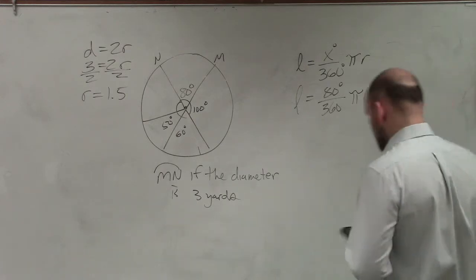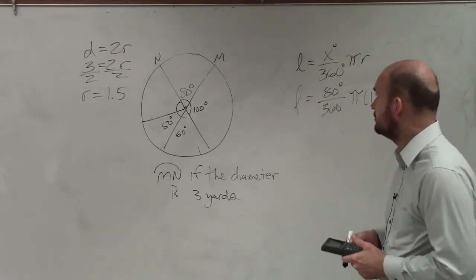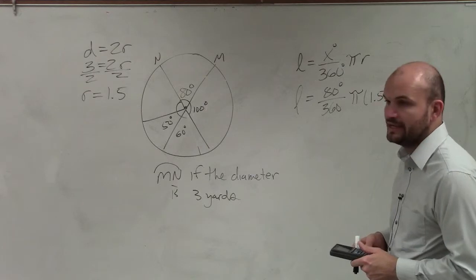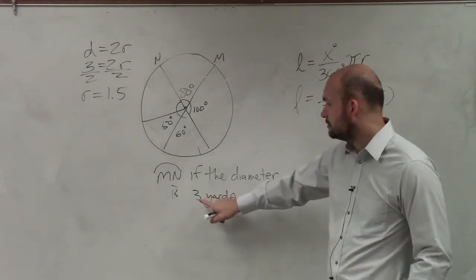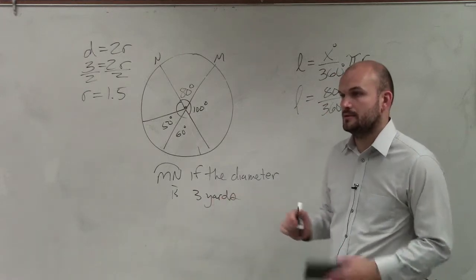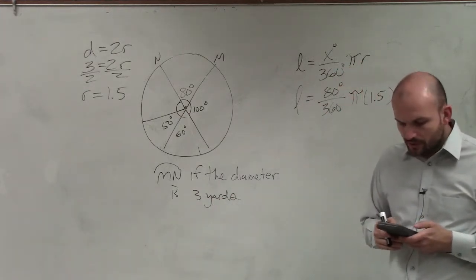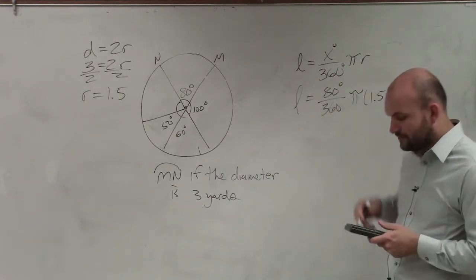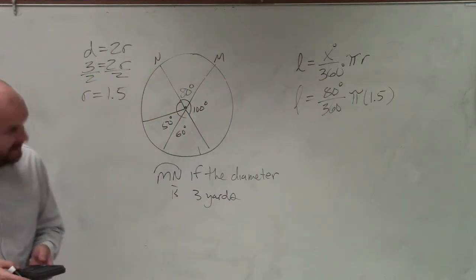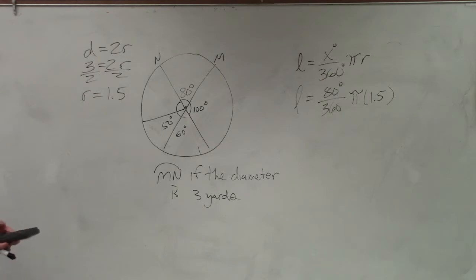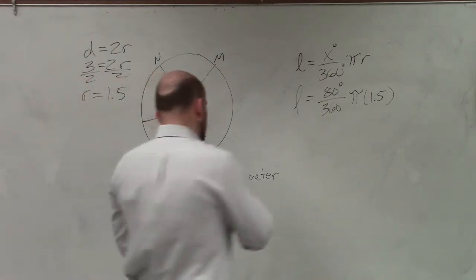Where did you get the 1.5 from? It's half of 3, 3 divided by 2. Where did you get 3? It's the diameter. So 80 over 360 is 2 ninths. I multiply 2 ninths times π times 1.5, and I get 1.04.